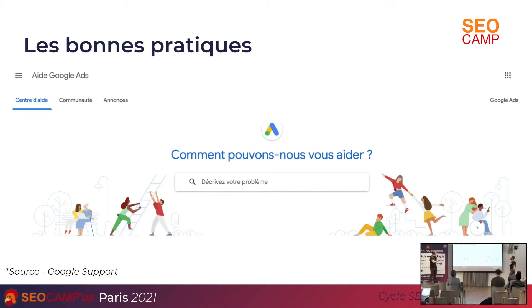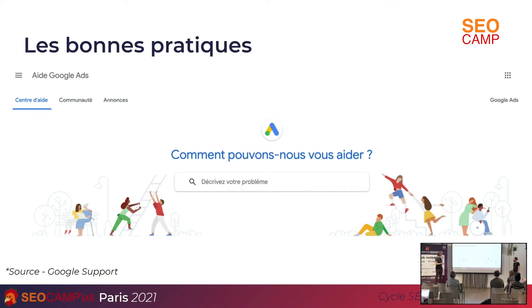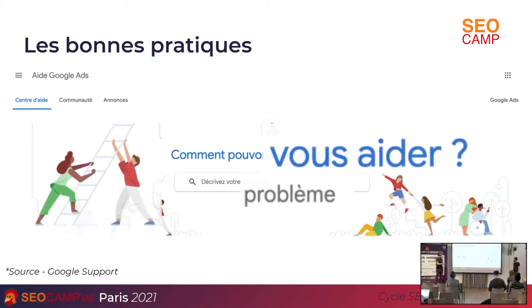Il y a cinq moyens principaux qu'on a isolés, que Google utilise pour nous parler, nous conseiller et nous orienter. Il y a évidemment le Google Support, ce sont des pages d'aide. On a tous déjà été dessus, ceux qui utilisent Google Ads. L'approche, c'est vraiment de dire qu'on est là pour vous aider, on va résoudre vos problèmes.